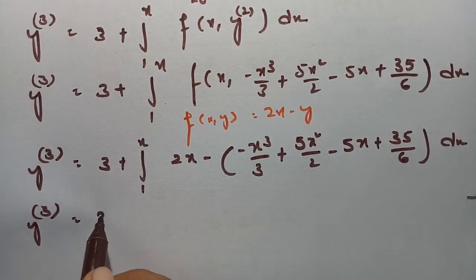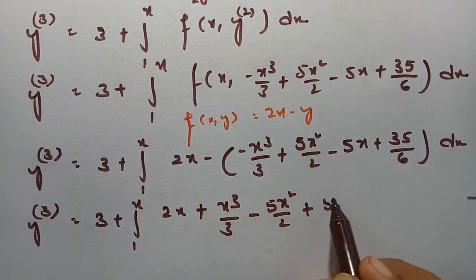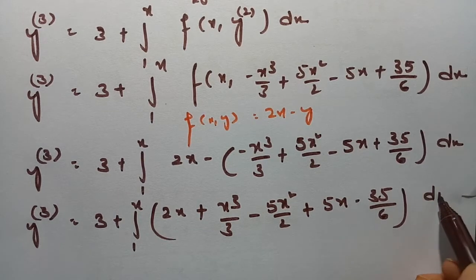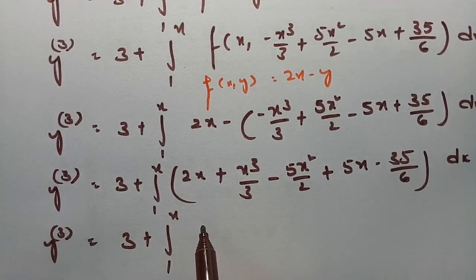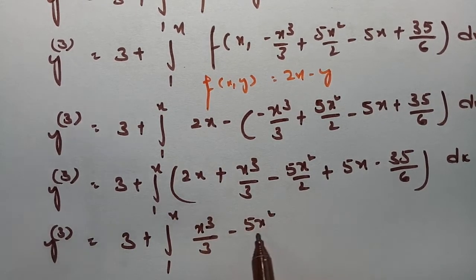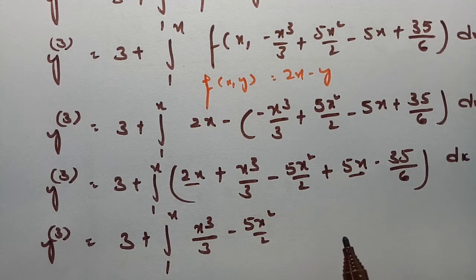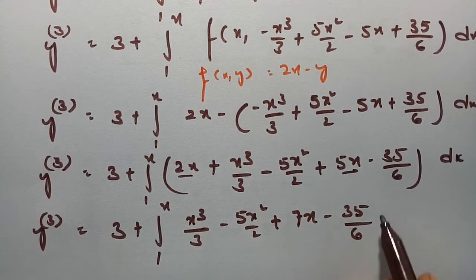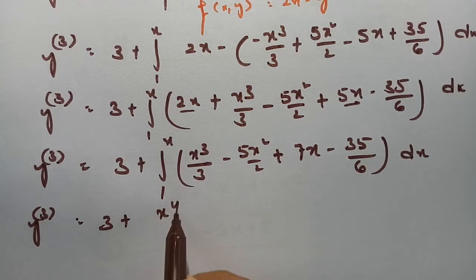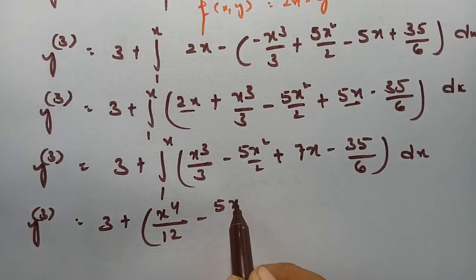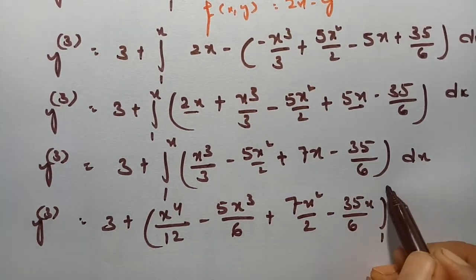Expanding: 3 plus integral from 1 to x of (x³/3 - 5x²/2 + 7x - 35/6) dx. Integrating: 3 plus [x⁴/12 - 5x³/6 + 7x²/2 - 35x/6] from 1 to x. Now we substitute the upper limit minus the lower limit.